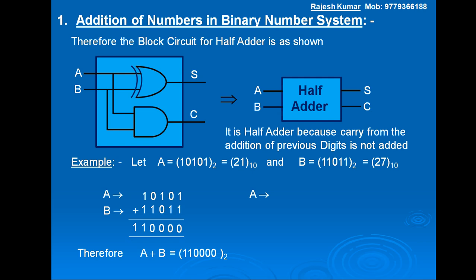In decimal system, A equals 21 and B equals 27. Adding them: least significant digits 7+1 become 8 with no carry; next digits 2+2 become 4; so the answer is 48 in decimal. This equals 110000 in binary number system. So A plus B equals 110000 in binary and 48 in decimal. By this method we can add two numbers in the binary number system. Thank you very much.